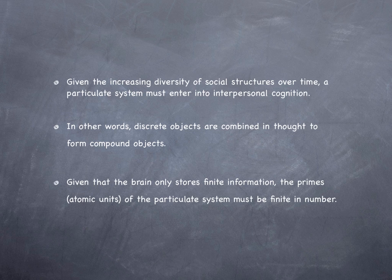Even before the discovery of the double helix, we know that on some level the principle of inheritance must be something particulate — which indeed it is. Discrete objects are combined in thought to form compound objects. The brain only stores finite information, so the primes — the atomic units — of the particulate system for interpersonal cognition must be finite in number. There must be a finite number of primes. So what are the primes of interpersonal cognition?